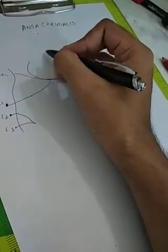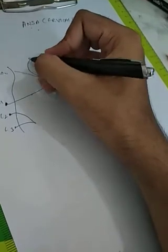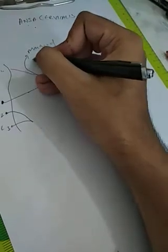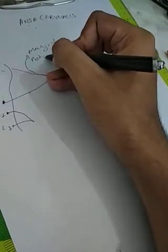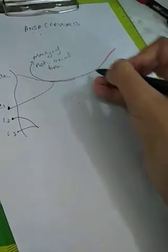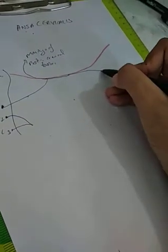This C1 branch gives one branch to the meninges of the posterior cranial fossa. Then it supplies the thyrohyoid muscle and the geniohyoid muscle.